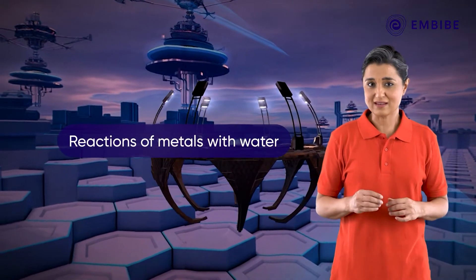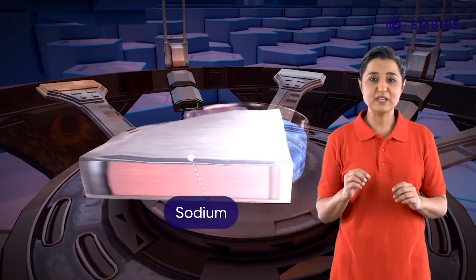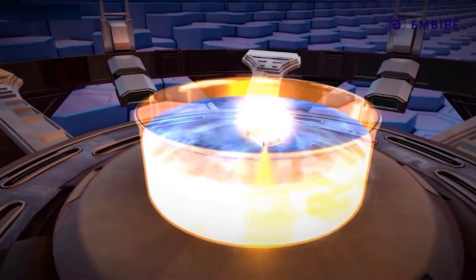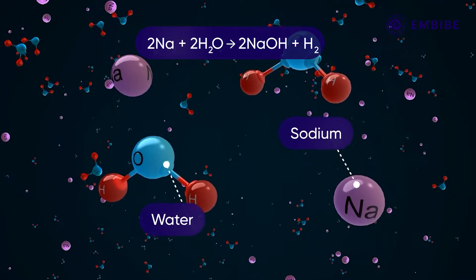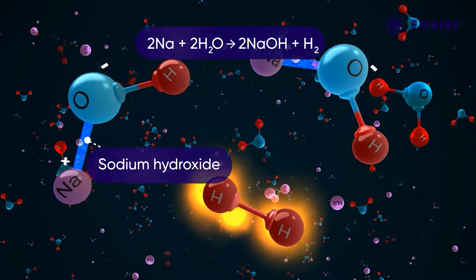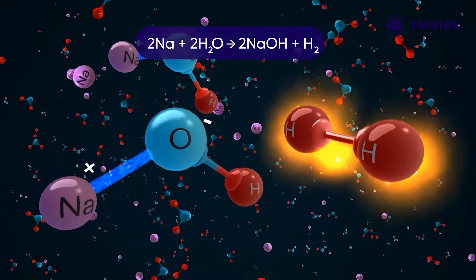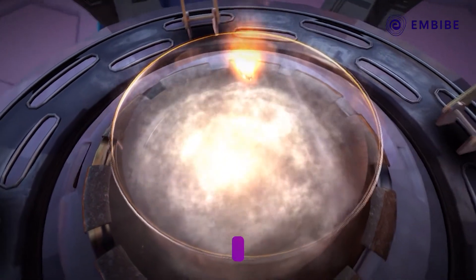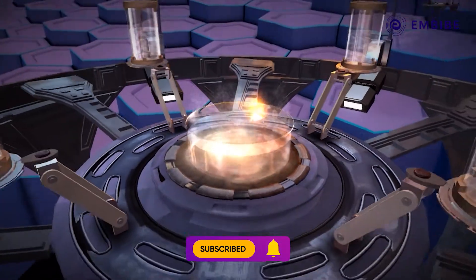Let us now study how metals react with water. Drop a small piece of sodium in a trough filled with cold water. Sodium splits up water, forming sodium hydroxide and hydrogen gas in a highly exothermic reaction. This generated heat ignites the hydrogen gas explosively, seen as a yellow flame on the surface of water.